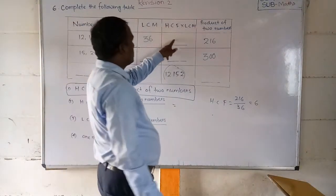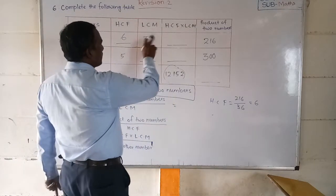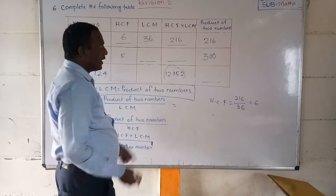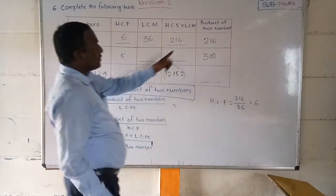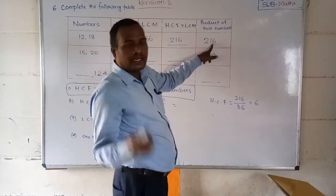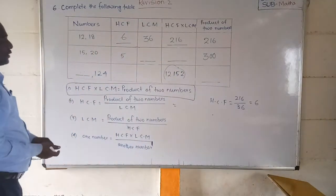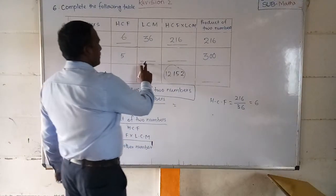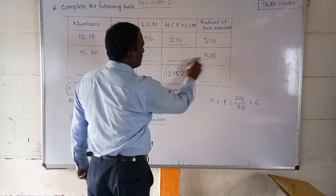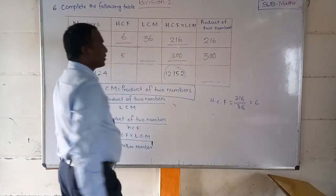Now, HCF into LCM — if we multiply HCF into LCM, how much will we get? It will be 216. Why? Because the formula already states: HCF into LCM is equal to product of the two numbers. The product of the two numbers is already given as 216, so we can directly connect that.